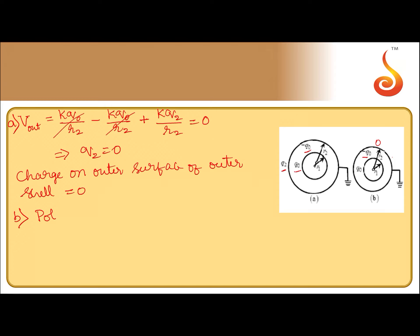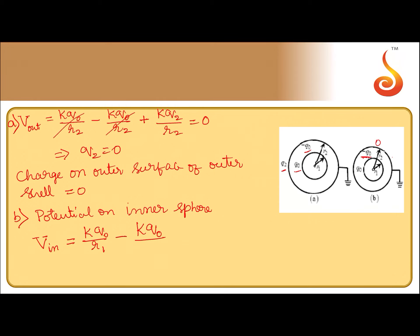Coming to the potential on the inner sphere, there are two contributions: one due to the charge on itself, and one due to the charge -q₀ on the inner surface of the outer sphere. The potential on the inner sphere is kq₀/r₁ minus kq₀/r₂. This can be written as (1/4πε₀) · q₀ · (1/r₁ − 1/r₂). This is the potential on the inner sphere.